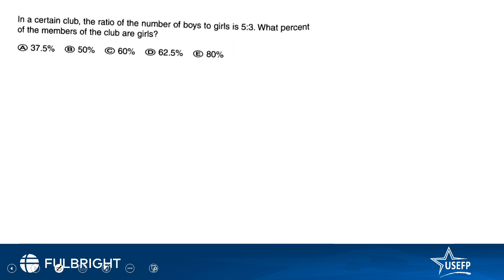Next question: in a certain club the number of boys to girls ratio is 5 ratio 3, so boys to girls ratio is 5 over 3. What percent of members of the club are girls? So we need to find what is the percentage of girls to the club members. So the number of girls is less than the number of boys.